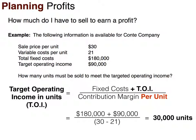Using the first equation, you should have come up with 30,000 units to get a target operating income of $90,000.